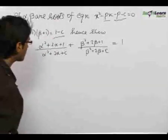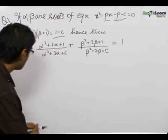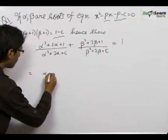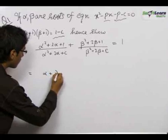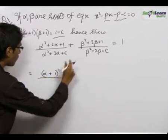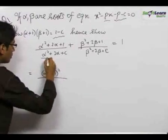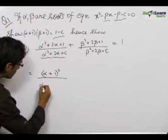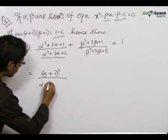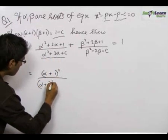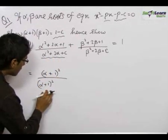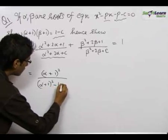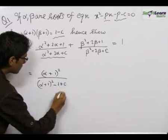For the second part, we can write alpha² + 2*alpha + 1 as (alpha + 1)². Now we can also convert the denominator: since we have added an extra 1, we subtract a 1 plus c.